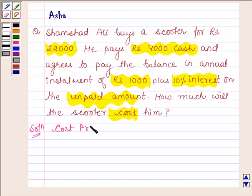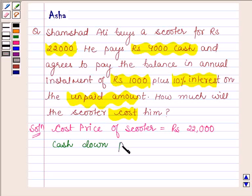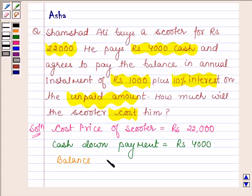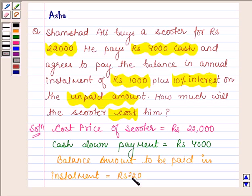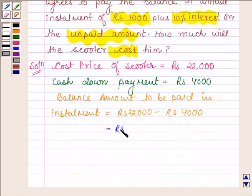The cost price of a scooter is Rs 22,000 and the cash down payment is equal to Rs 4,000. So the amount to be paid in installments is Rs 22,000 minus Rs 4,000. The balance amount to be paid in installments is equal to Rs 18,000.